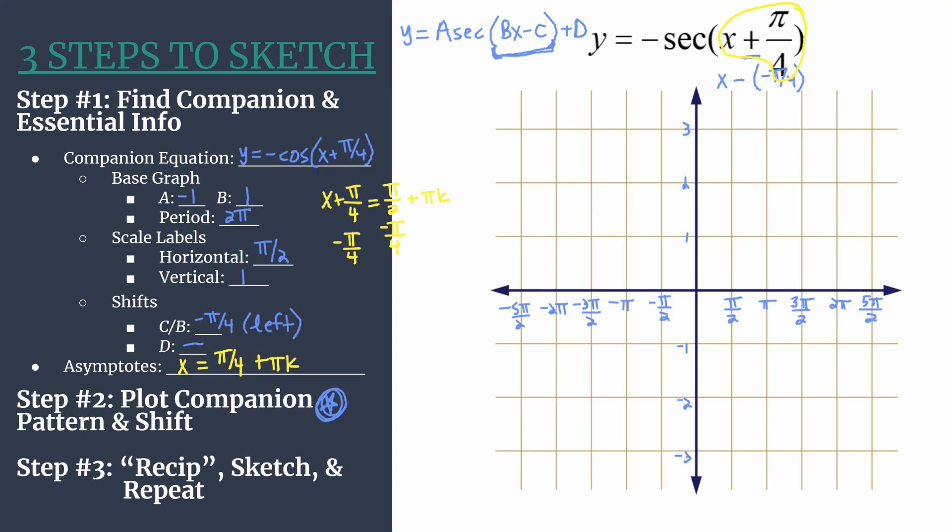I like to kind of anticipate where my asymptotes should be for my final graph. So plug in 0 for k, we should have one at pi over 4. Let k be 1, do a little simplifying, we should have another asymptote at x equals 5 pi over 4. If you let k equal negative 1, we should be anticipating another asymptote at x equals negative 3 pi over 4.